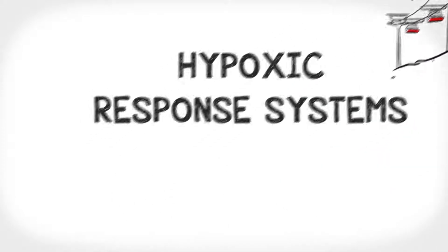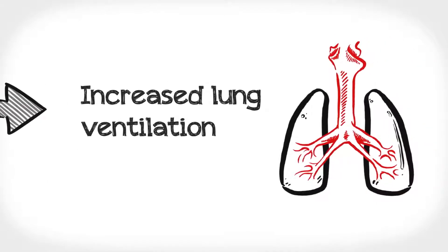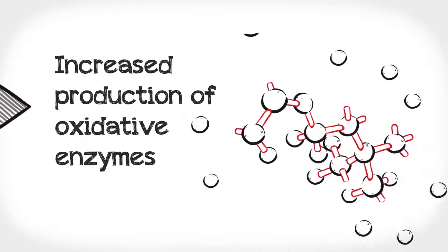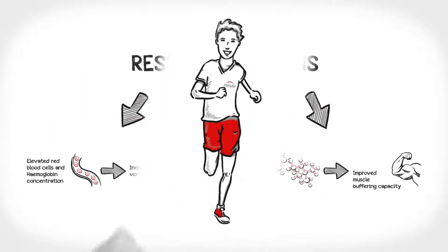This activates your hypoxic response systems, starting a chain reaction in your body, which includes elevated red blood cells and hemoglobin concentrations, increased lung ventilation, increased production of oxidative enzymes, and improved muscle buffering capacity. All of these together improves your aerobic performance.